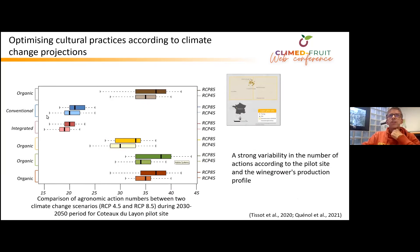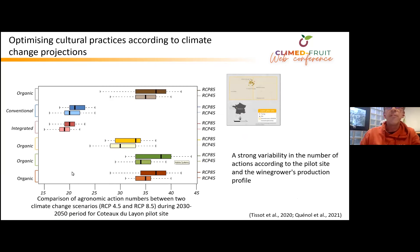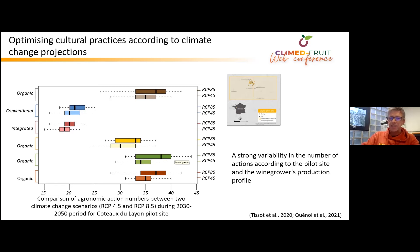This type of result helps wine growers define a reasoned adaptation strategy by identifying the areas of the vineyard where it will be necessary to start changing grape variety. Regarding cultural practices, as a result of simulation according to climate change scenarios, there is a high degree of variability in the number of interventions depending on the pilot site and the wine grower's production profile — for example, organic, conventional, or integrated. In the Coteaux du Layon pilot site in France, simulation results show a slight increase in the number of actions, especially for organic plots, largely related to an increase in the number of fungicide treatments.